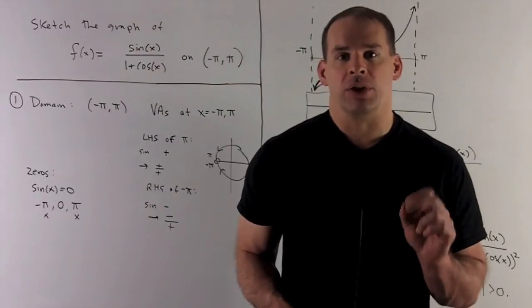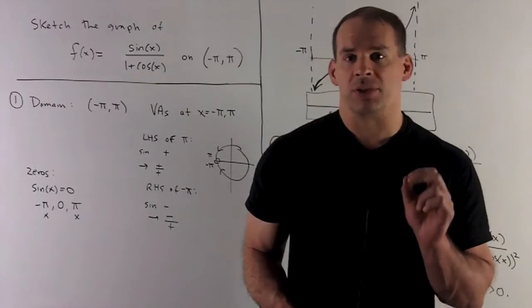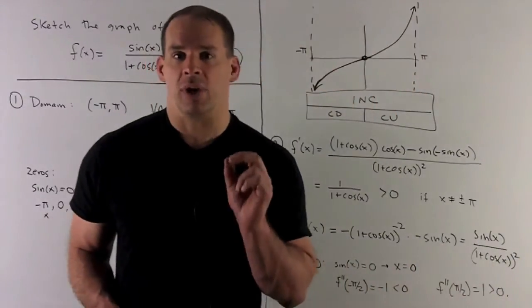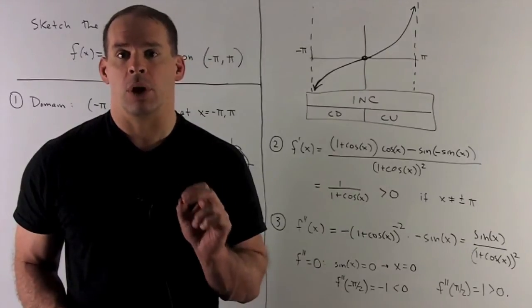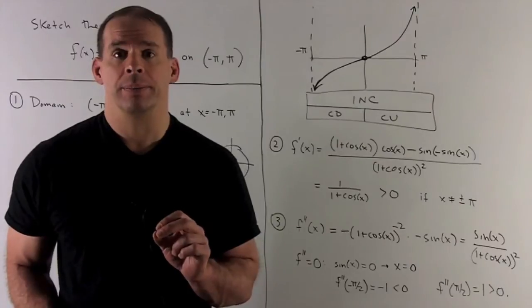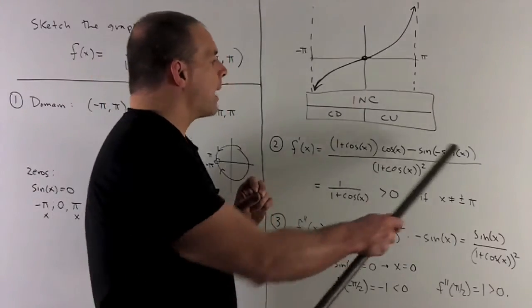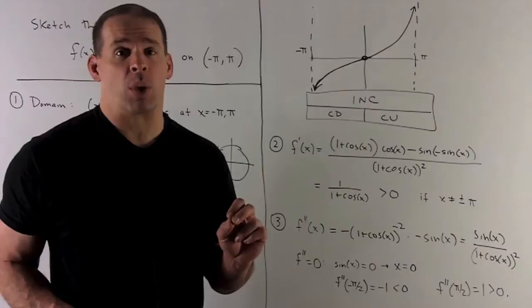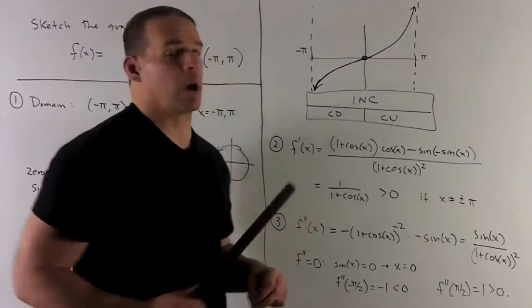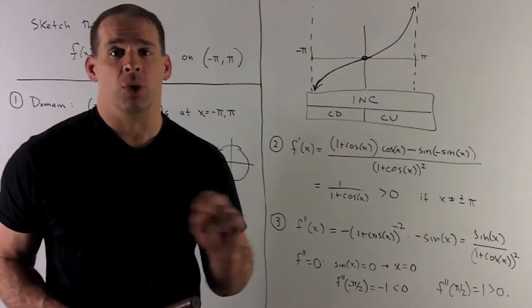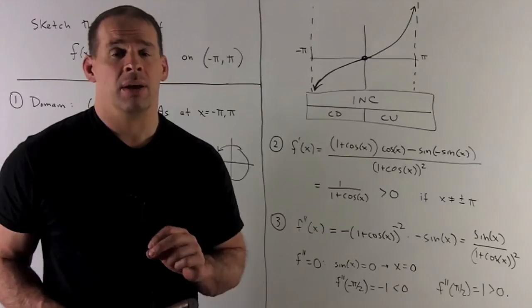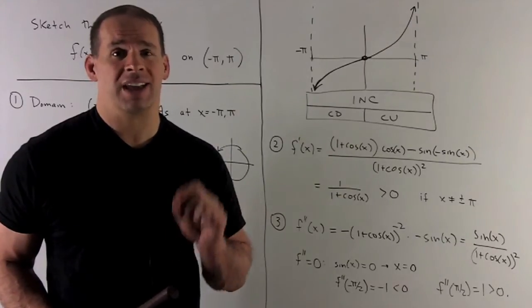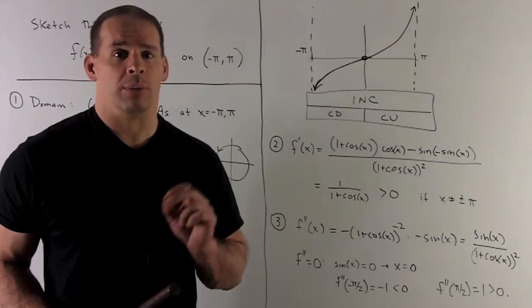Now we take the derivative to find critical points and increasing/decreasing behavior. We have a quotient, so we use the quotient rule: low d-high minus high d-low over low squared. After applying it, the sine terms combine — minus sine squared drops out leaving sine squared — and the first term gives cos(x) + cos²(x). Using cos²(x) + sin²(x) = 1, the numerator simplifies to 1 + cos(x). The denominator is (1 + cos(x))², so we cancel one factor and get f'(x) = 1 / (1 + cos(x)).